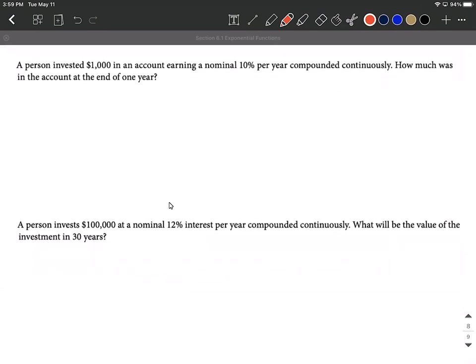Okay, so a person invested $1,000 into an account earning a nominal 10% per year compounded continuously. So big keyword here when you see compounded continuously, that's pointing us towards the continuously compounded interest formula. So you can use your version if you want with the A, I'm going to go with P times e raised to the R times T power.